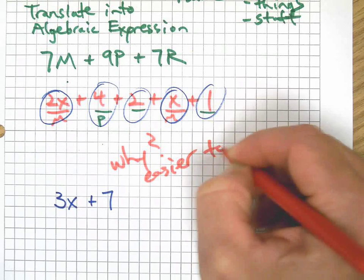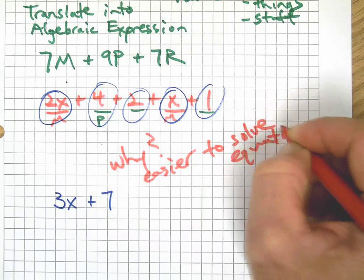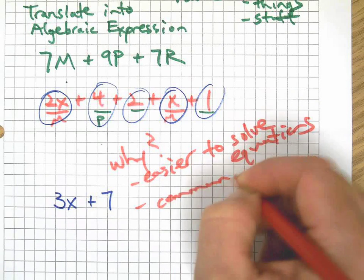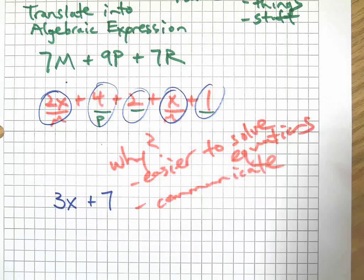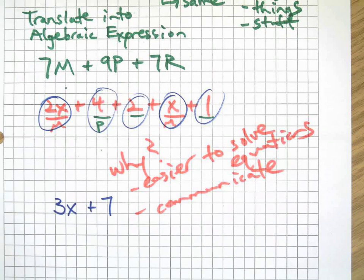It's easier to solve later when we get into equations. We can communicate with each other better because we might start with a different mix of things that might look different at the beginning. And when we simplify them, it might turn out we have the same thing.